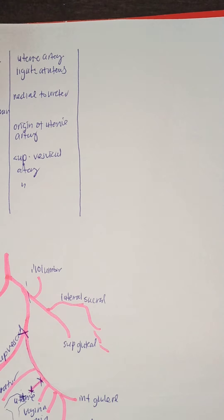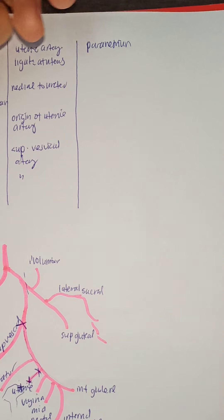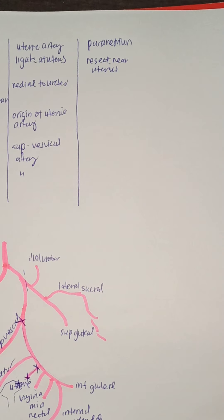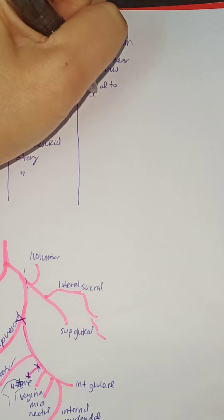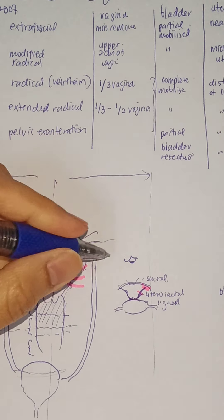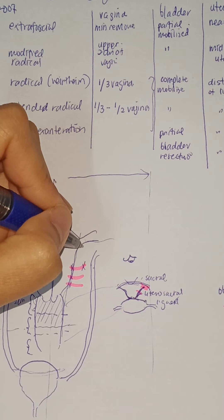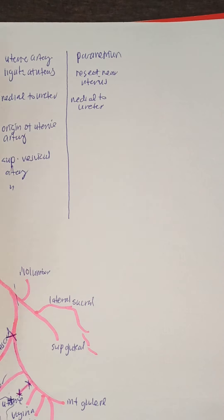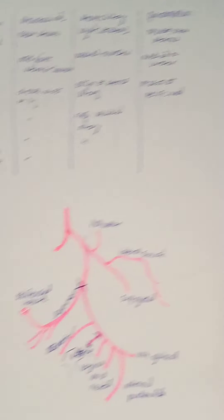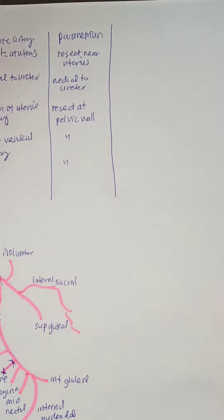Regarding the parametrium — the surrounding tissue. Initially in Type 1 we resect near the uterus, so very medially. In Type 2, medial to the ureter. For Type 3 and beyond, we resect at the pelvic wall, removing tissue all the way to the pelvic wall. The same approach applies for Extended Radical and Exenterations.